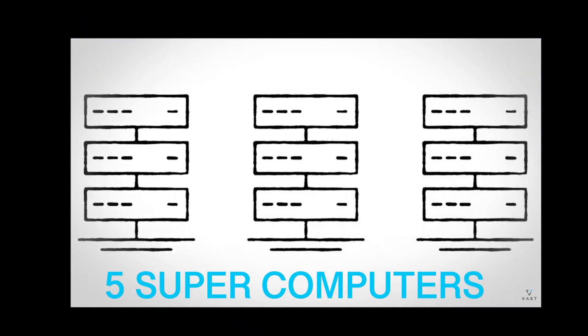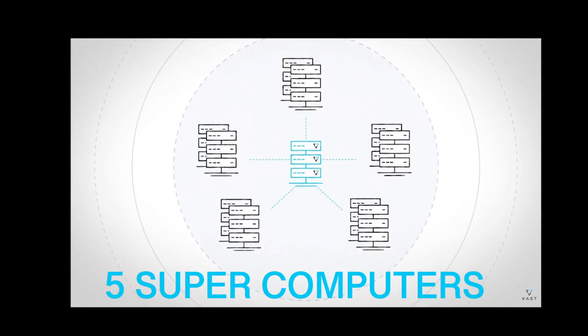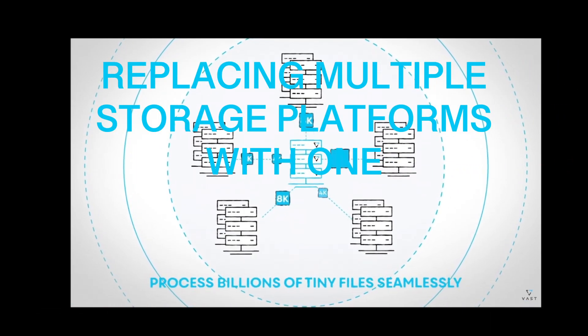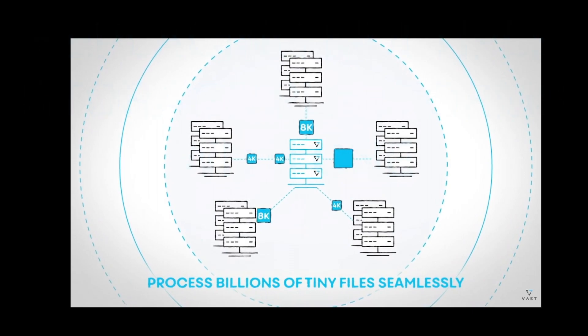In total, we're using five different supercomputers and VAS as the file system that connects all of that information together. We're transferring and creating billions of tiny files, so we really need a fast way to connect all that information.